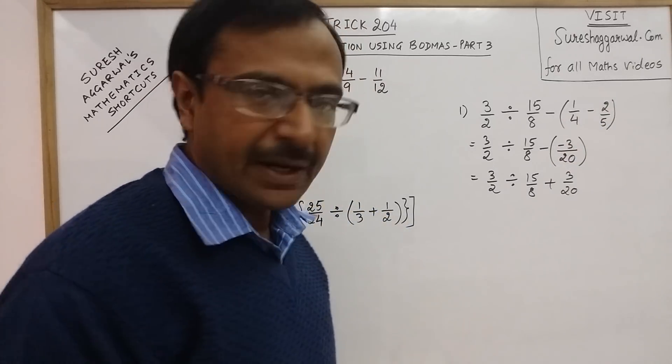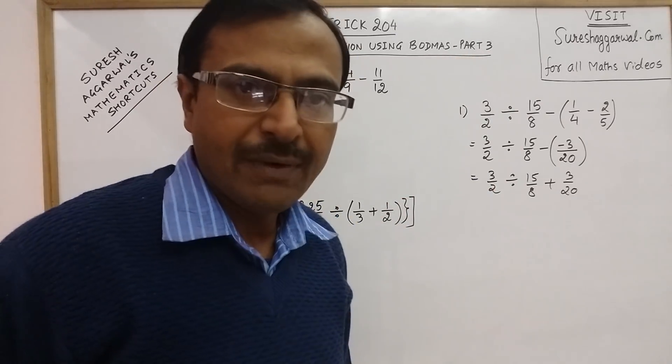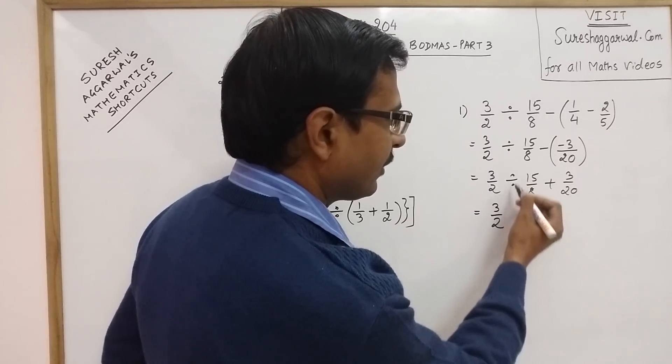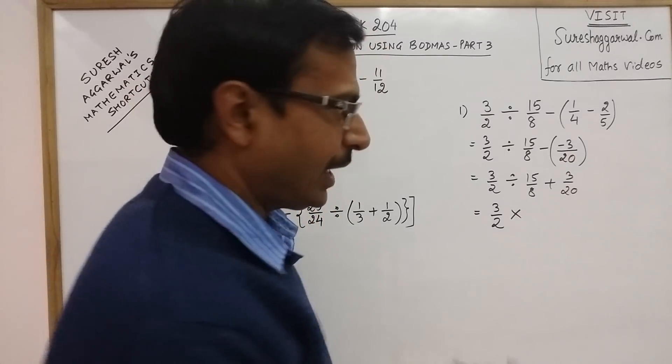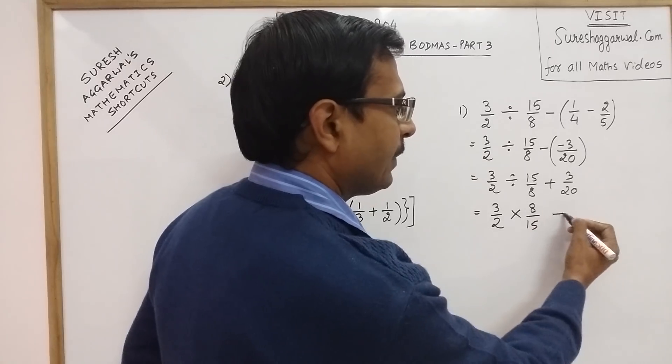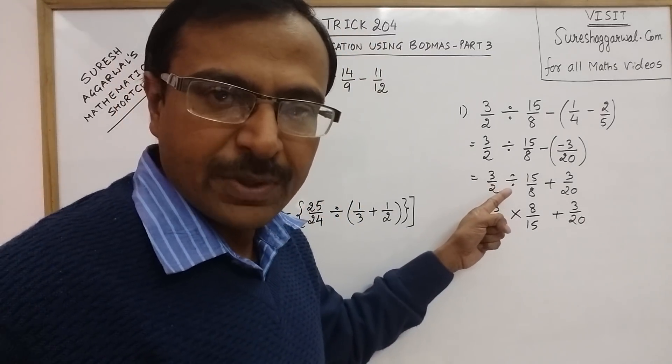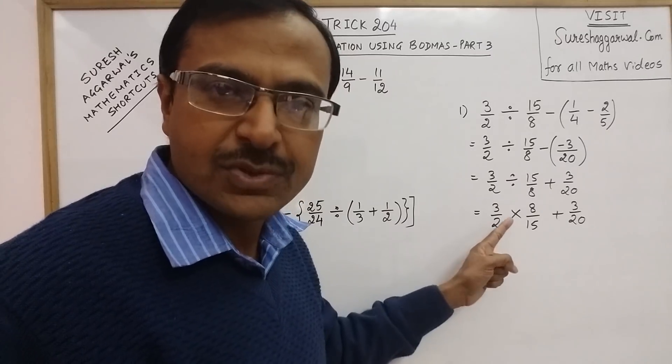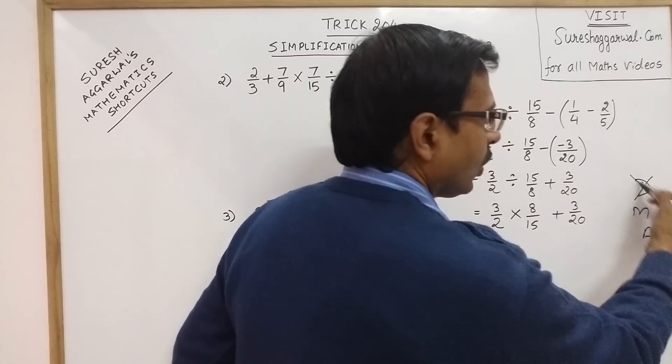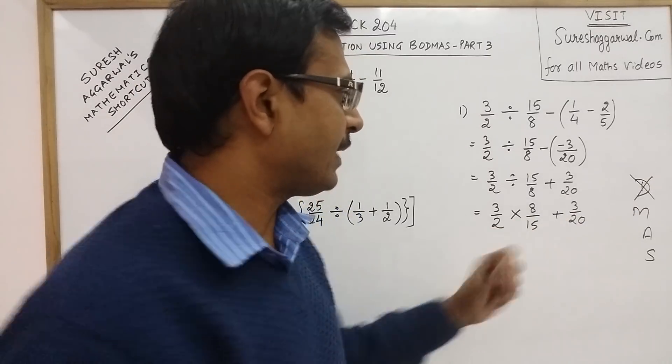Once you have got rid of the brackets, then you have to follow the sequence DMAS. Divide comes first, so we have to divide first. For dividing, we have to convert the division sign into multiplication sign and take the reciprocal of the second fraction. This becomes 8/15 and plus 3/20 will remain same. When the division operation is converted into multiplication, we have to see the sequence of operations again. Multiplication comes first, so we need to multiply these two.